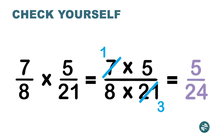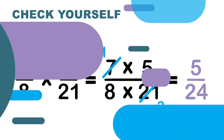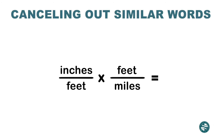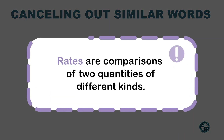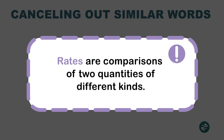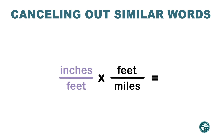This same technique of simplifying before you multiply — cross cancellation — I can also do it with words. In dimensional analysis, what you're doing is multiplying rates. Rates are comparisons of two quantities of different kinds. So each fraction is a rate, and I'm multiplying rates. I cannot really multiply the words, but I can cross cancel similar words.